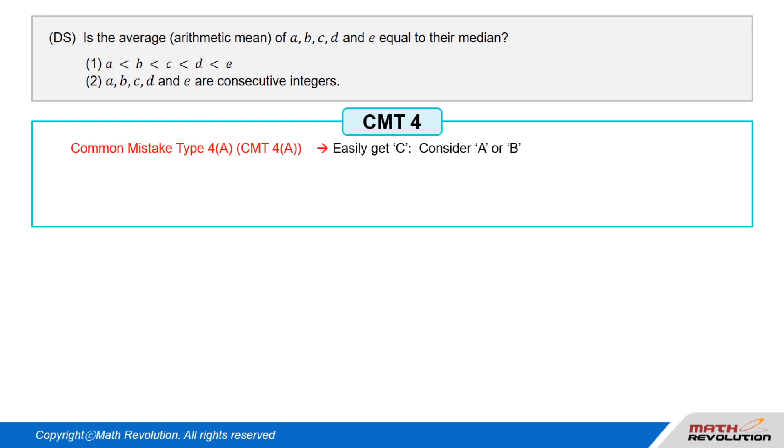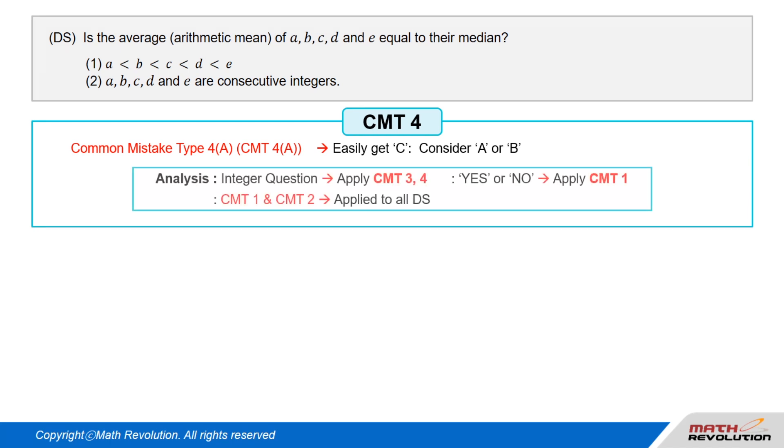Solution. Now we will solve this D.S. question using the variable approach. Common mistake type 4A: If you get C as an answer too easily, then consider A or B as an answer. Let's look at the information from the question prompt or the original condition. This is an integer question, and therefore one of the key questions.